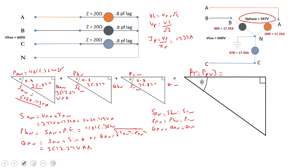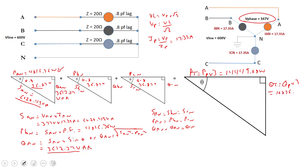Taking our phase power value of 4816.36 watts times three gives us 14,449.08 watts for the total true power. For the total quadrature power, it's Q of the phase times three — because it's balanced. The Q of each phase is 3612.27, so multiplying by three gives approximately 10,836.81 VAR. If it were unbalanced, we couldn't use this shortcut.